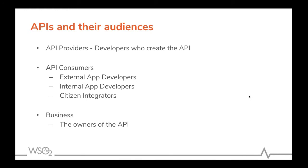Then we have citizen integrators. Citizen integrators are a special kind of API consumer — essentially business users within the organization who are not necessarily developing apps, but are consuming APIs to perform their day-to-day tasks. They are also a kind of API consumer. Finally, you have the business, which is the actual owner of the API. Each stakeholder here is dependent on each other, and we're going to look at the role of what an API product manager does.